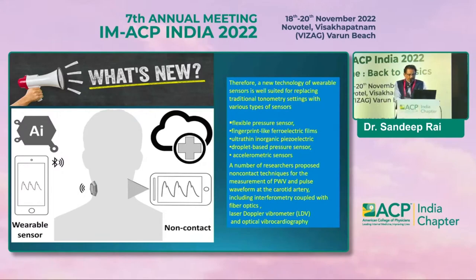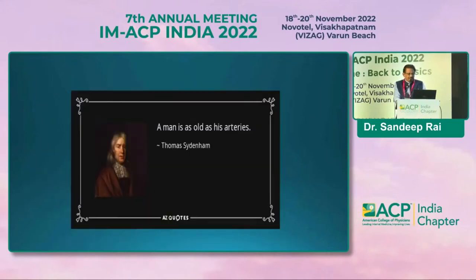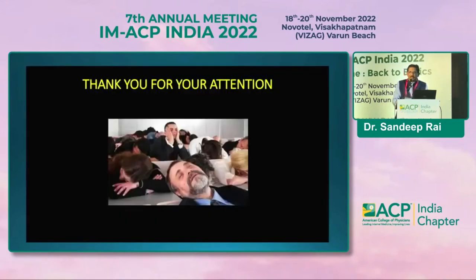In summary, pulse wave analysis, pulse wave velocity, and central pressure are measures of arterial stiffness and are additive risk factors for cardiovascular disease. Measurement is easy and can be done in an office or clinic. It adds to cardiovascular risk stratification and guides hypertension management. As Thomas Sydenham said, 'A man is as old as his arteries.' Thank you very much.